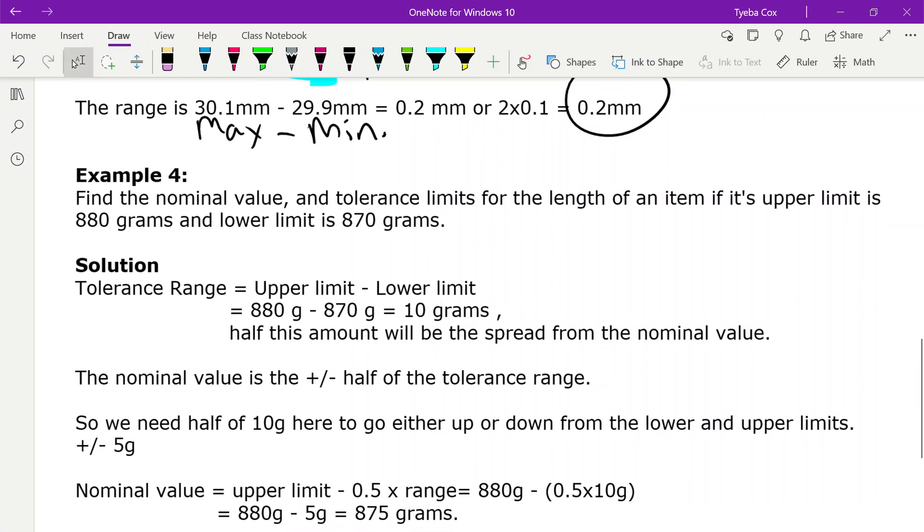Now example four. Find the nominal value and the tolerance limits for the length of an item, if its upper limit is 880 grams, and its lower limit is 870 grams. So here you're given a bit of different information, and you have to figure out your nominal value and your tolerance limit. So what's the target measurement that we're looking for?